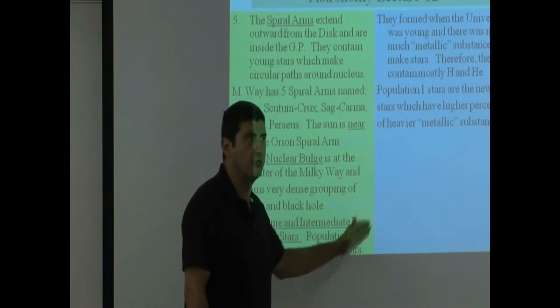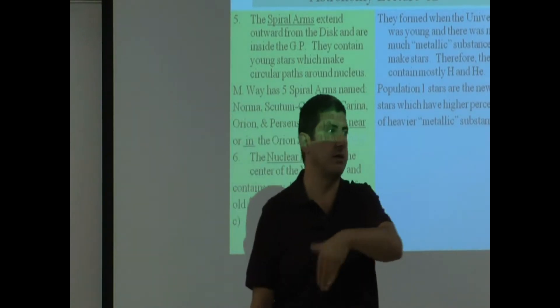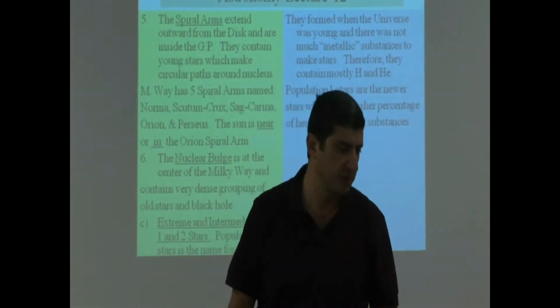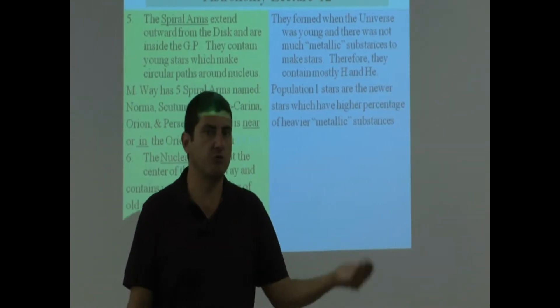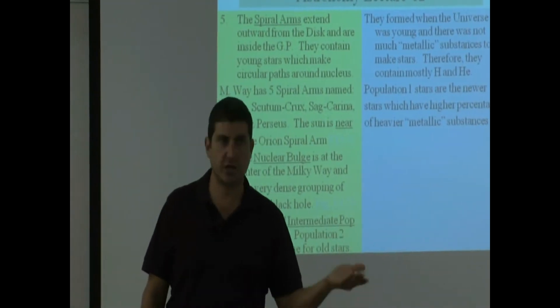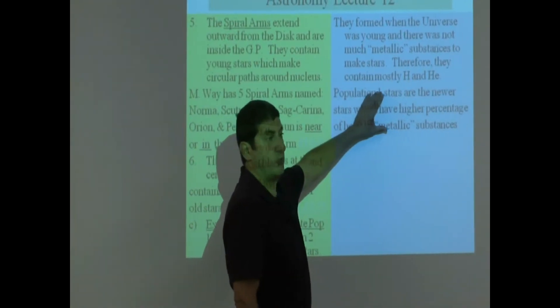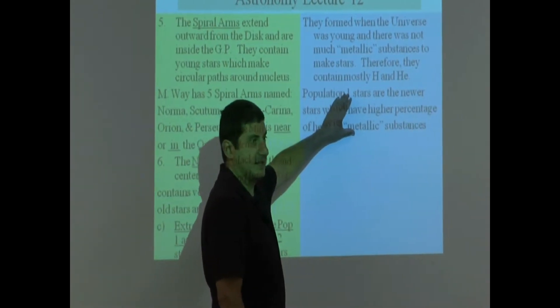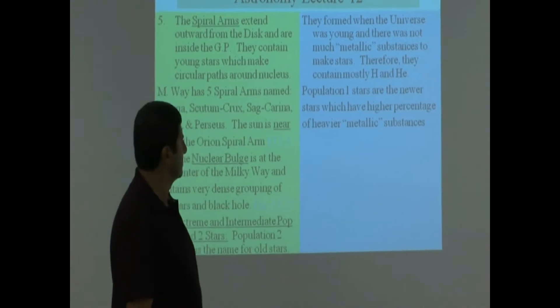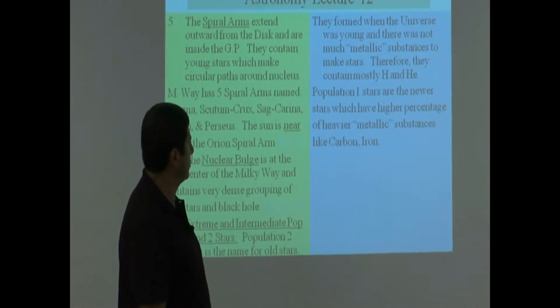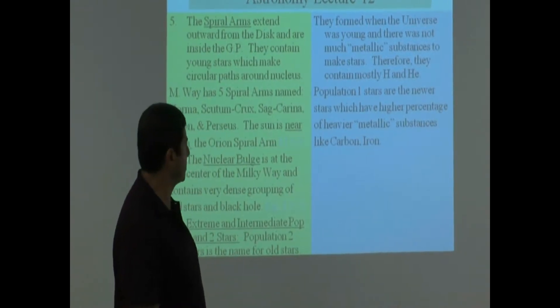Because Pop 2 stars were formed very old and they mainly have hydrogen, helium, so they're not likely to have Earth-like terrestrial planet around it. A Pop 1 star is more likely to have an Earth-like planet. So they have heavier metallic substances like carbon, iron.